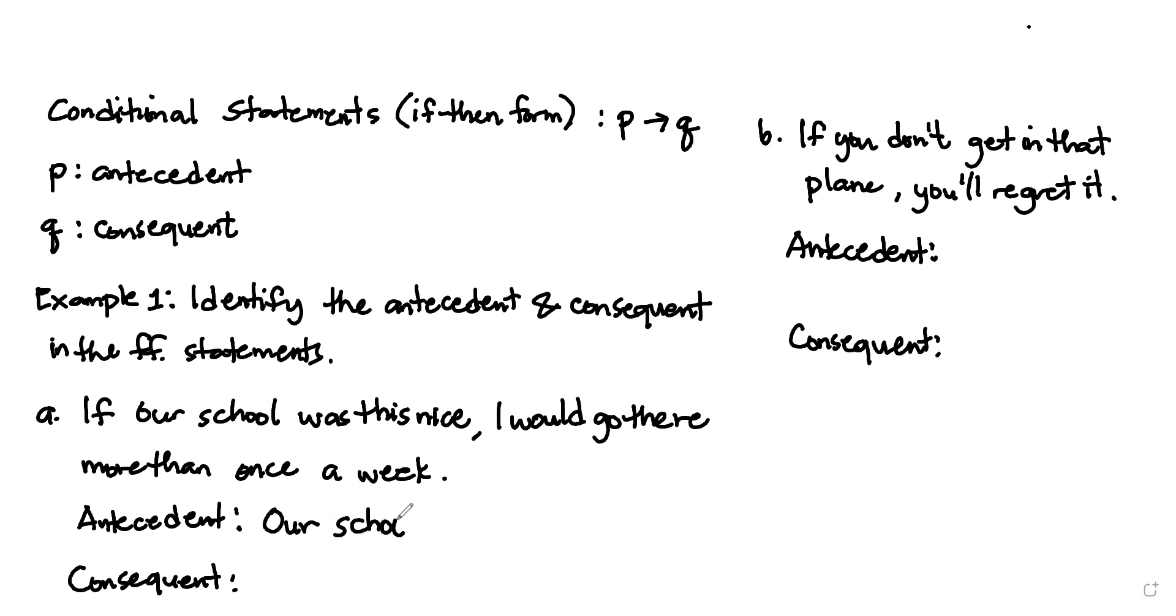Our school was this nice. That is your antecedent. And Q is the consequent, so we'll have I would go there.